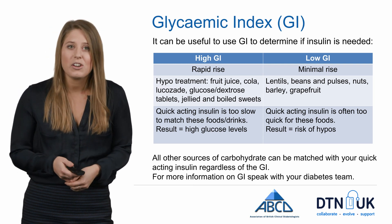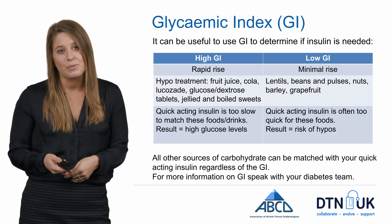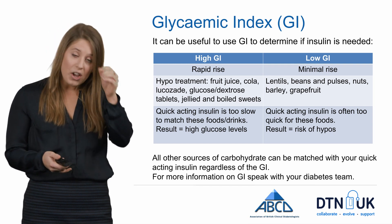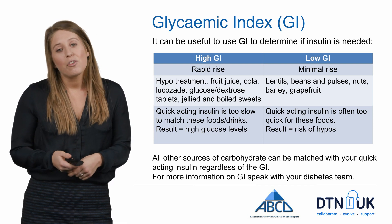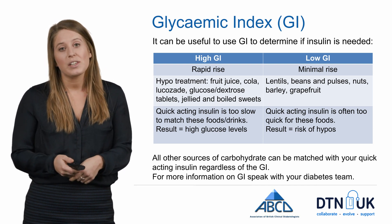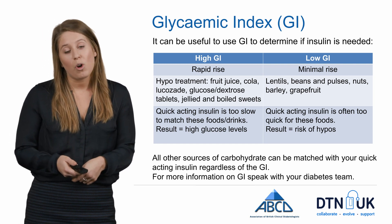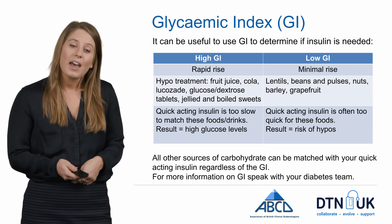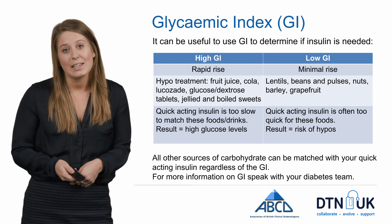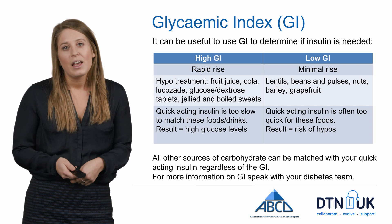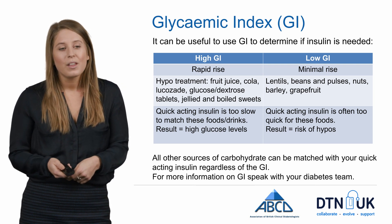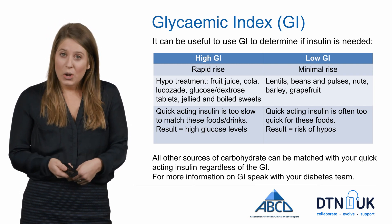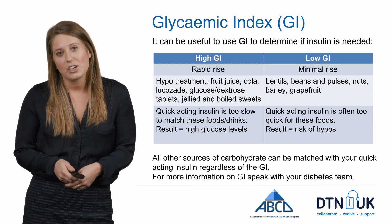On the other hand, low GI foods cause a minimal rise in blood glucose levels — things like lentils, beans, pulses, nuts, barley and grapefruit. Although they contain carbohydrates, they don't tend to push blood sugars up too quickly. Therefore, if you match quick-acting insulin to the carbohydrate content of these foods, it can cause blood glucose levels to drop before that carbohydrate is absorbed, increasing the risk of hypoglycemia. We recommend not covering these foods with quick-acting insulin initially, but monitoring the effects — in large quantities you may need some insulin cover. All other sources of carbohydrate can be matched with your quick-acting insulin, whether more slowly digested like seeded bread or more quickly digested like white bread.